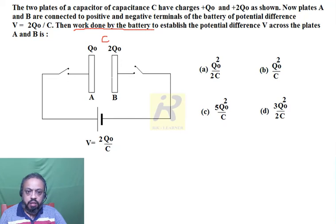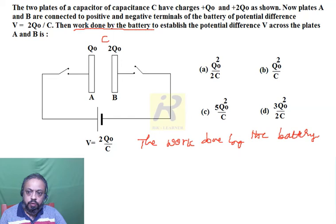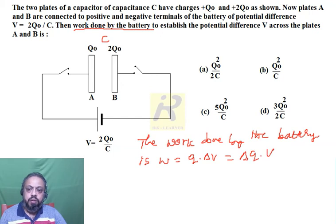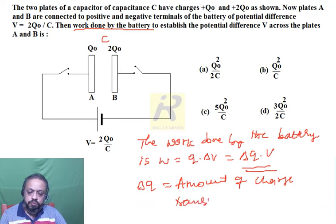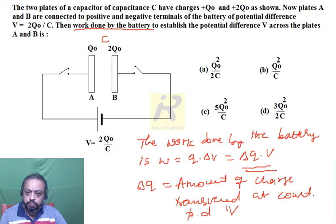When the battery is connected to the capacitor, the work done by the battery is W equals ΔQ into V, where ΔQ is the amount of charge transferred at constant potential difference V. This is the key formula that will help us find the final answer.